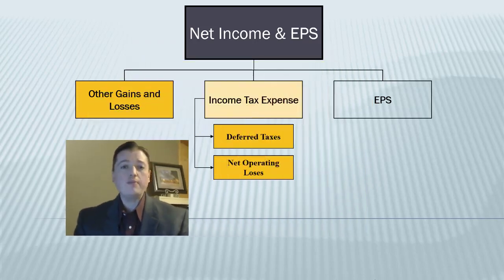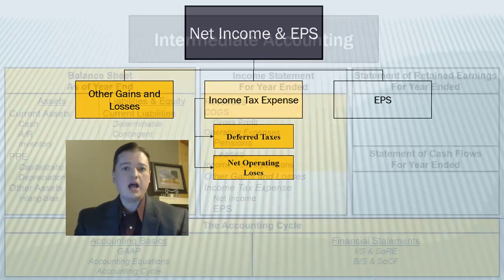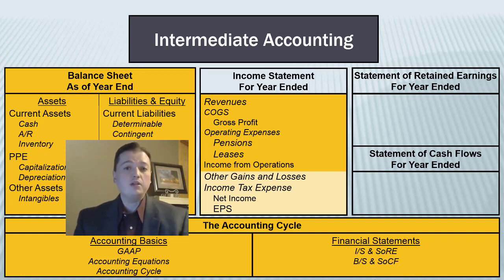Welcome back to our intermediate financial accounting class. In this segment we continue our discussion of finishing the income statement. We've talked quite a bit about taxes, perhaps the biggest piece of wrapping up our income statement. Now that we've finished up taxes, including the deferred tax income tax expense calculation getting us to net income, it's time to move from the simplified version of earnings per share to the real version actually required by FASB.